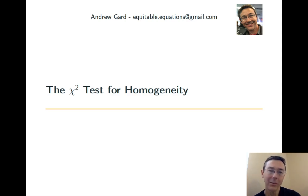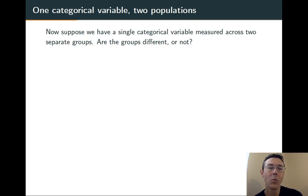Hey, everybody. Today we're getting into the chi-squared test for homogeneity. We're in this situation where we're measuring one categorical variable across two groups and asking whether the groups are different or not, whether they actually come from the same population.